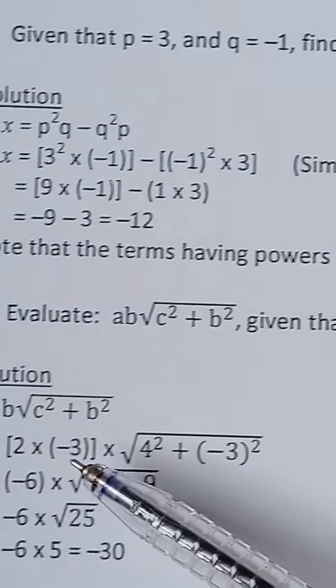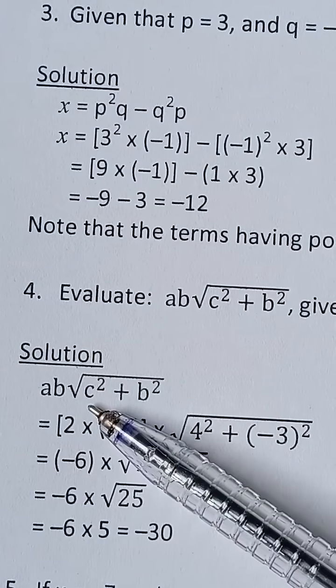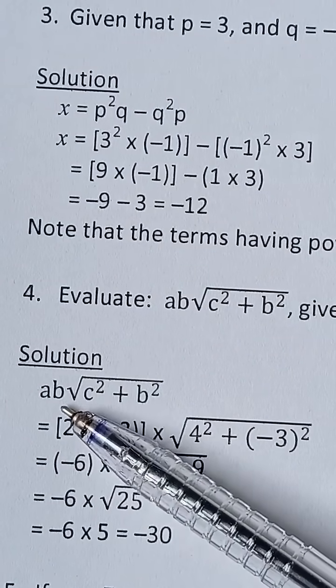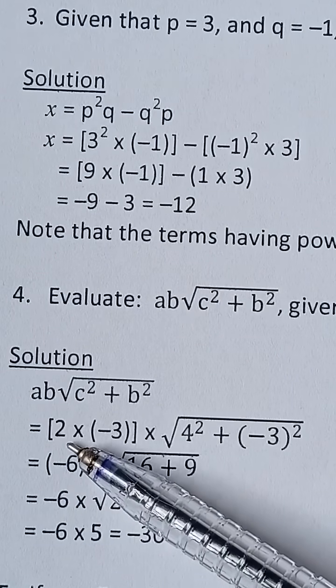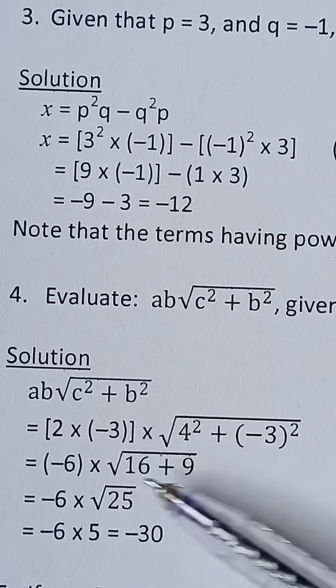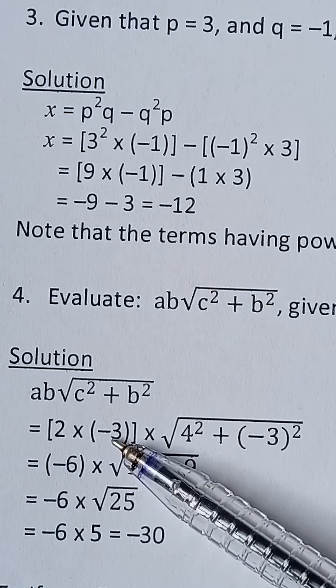Now in order to do that, we come back to the expression, where we have ab square root of c squared plus b squared. Don't forget that a is 2, so we have 2. B is negative 3, so multiply by negative 3.